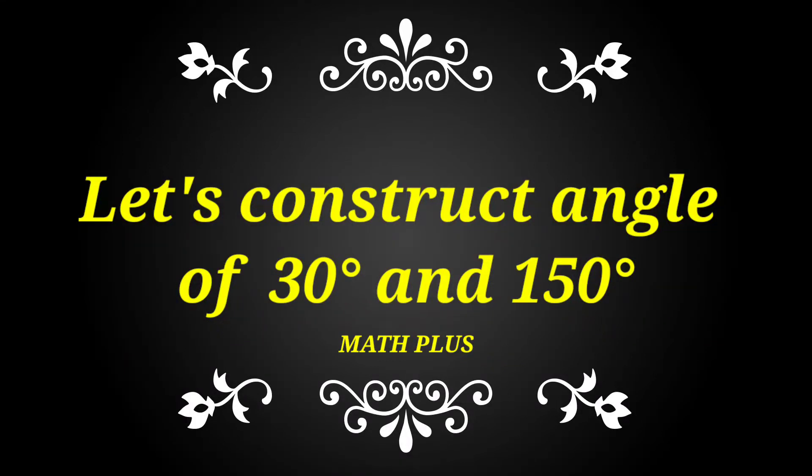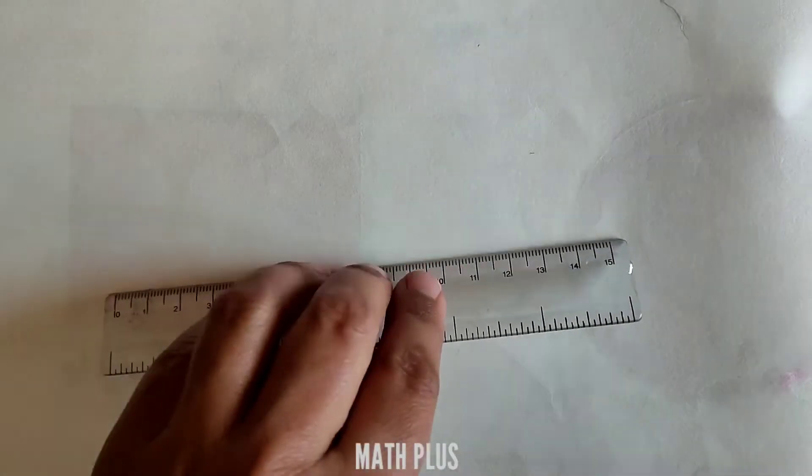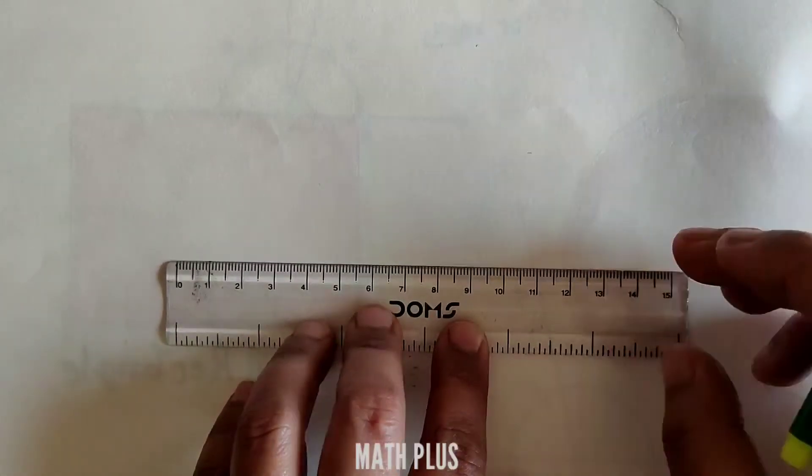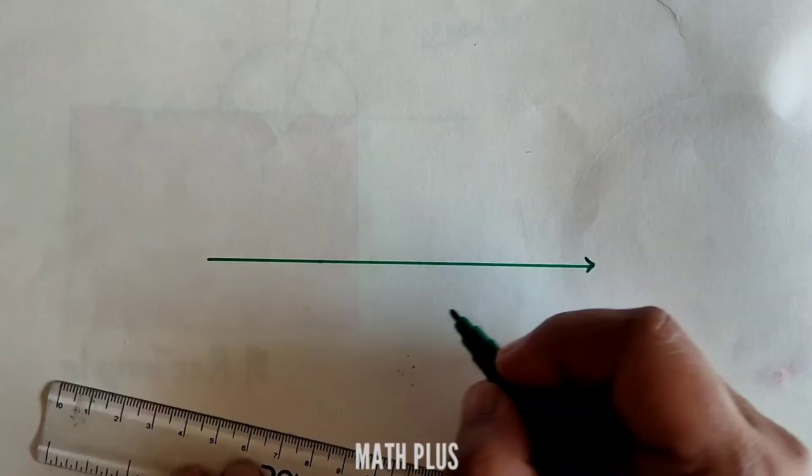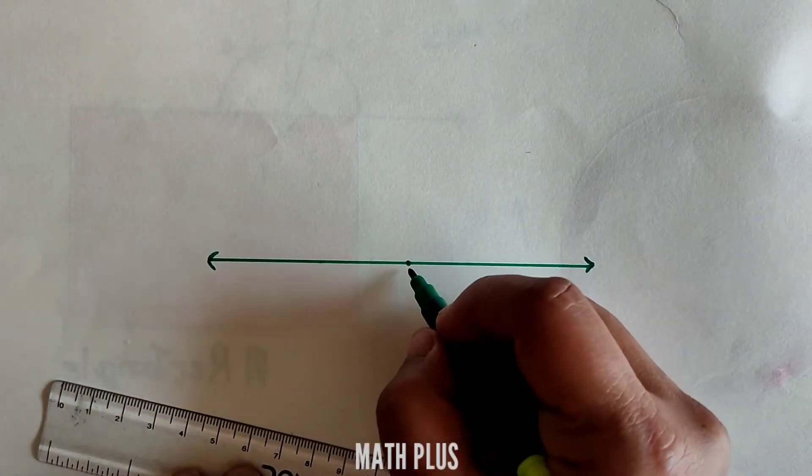Hello and welcome to my channel Math Plus. Today we are going to construct an angle of 30 degrees as well as 150 degrees. So let us start. Draw a line using a scale and a pencil, mark a point O.